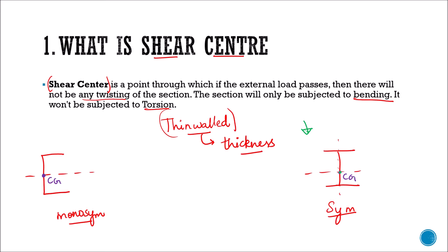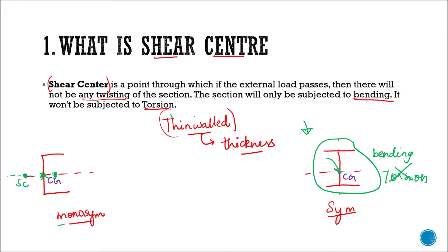When it comes to shear center, in a symmetrical section both the shear center and the center of gravity will be at the same point. Whereas in a monosymmetric section, the center of gravity will be within the section but the shear center will be outside the section. Note that the shear center will lie on the axis of the center of gravity in a monosymmetric section. When we apply a load at the shear center, the member will be subjected only to bending — there will be no torsion. This is the significance of the shear center.